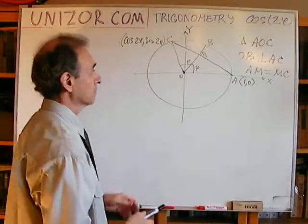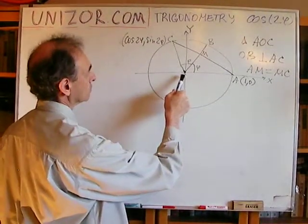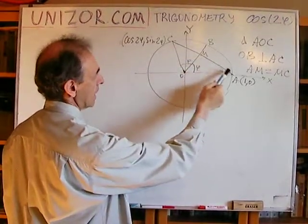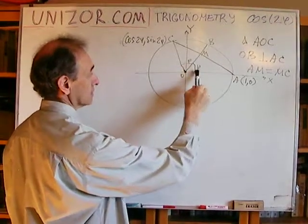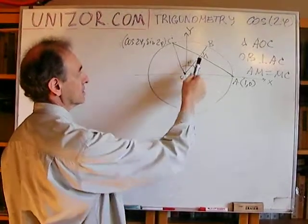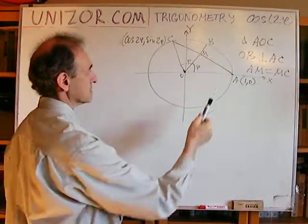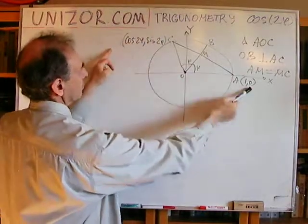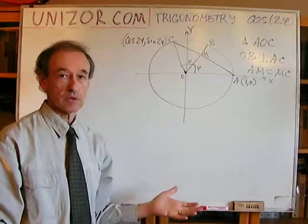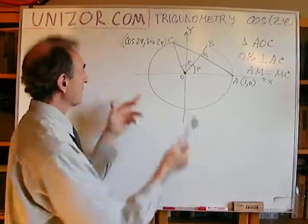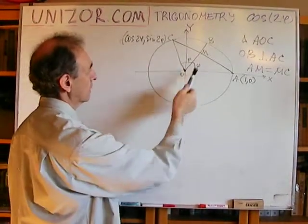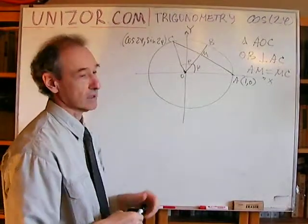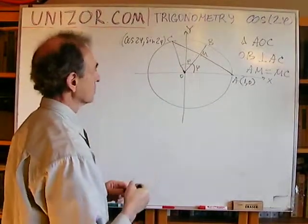On the other hand, from right triangle OMA, I can find AM, because I know the hypotenuse and the angle. AM is half of AC. So by doubling AM and equating it to the length calculated from coordinates, I will have an equation that will help me connect cosine of 2φ to some trigonometric function of the single angle φ. So that's the plan.